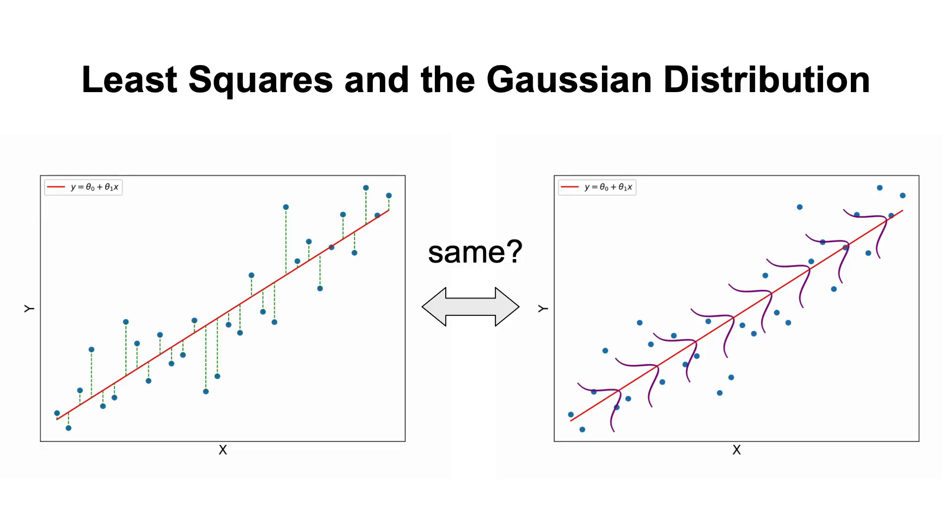So how do these two concepts relate to each other? Well, it turns out that the least-squares method using linear regression is equivalent to assuming that each data point is drawn from a Gaussian distribution, with the mean that lies on the regression line.